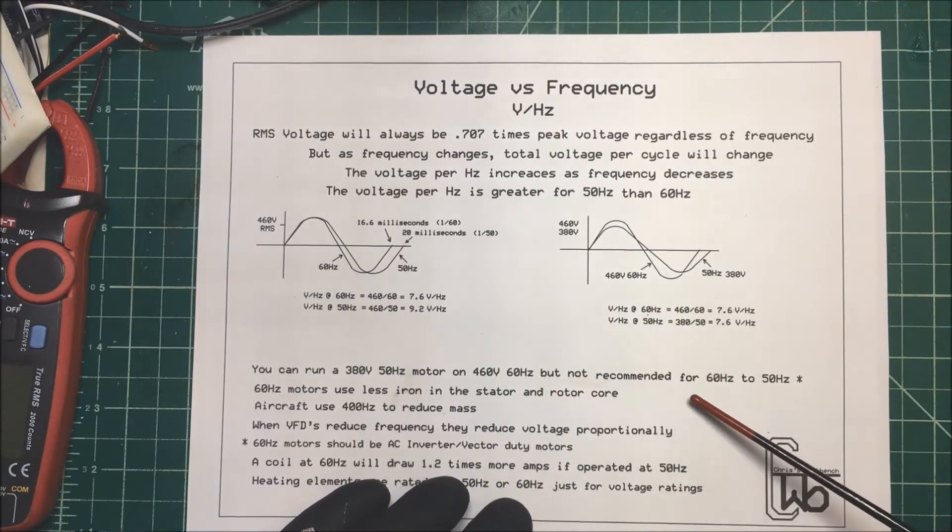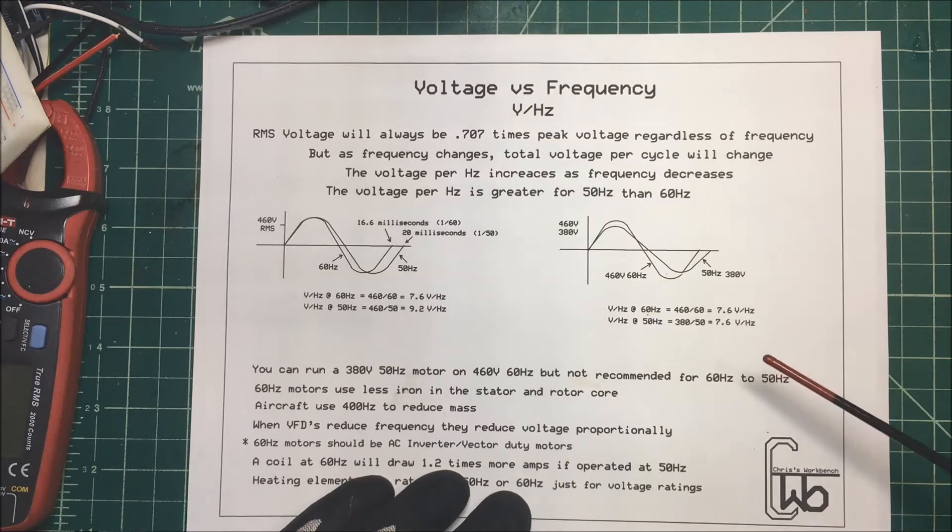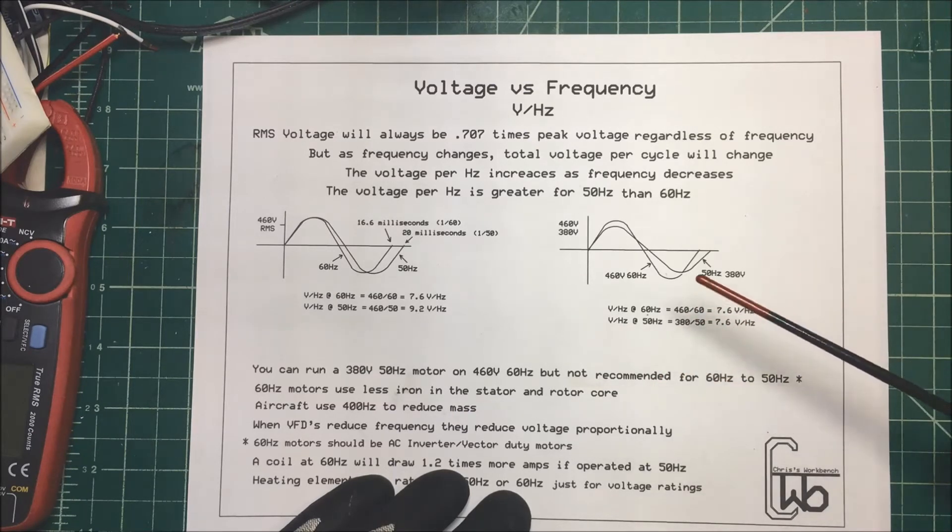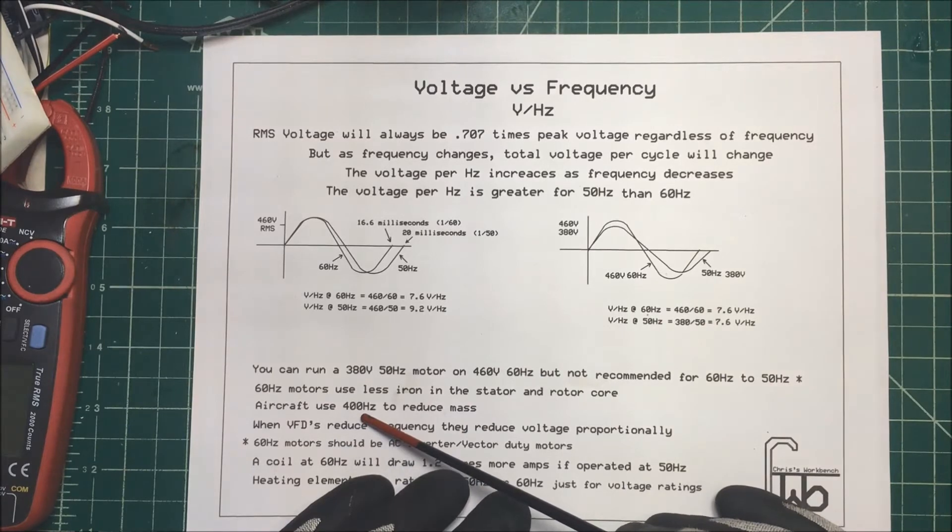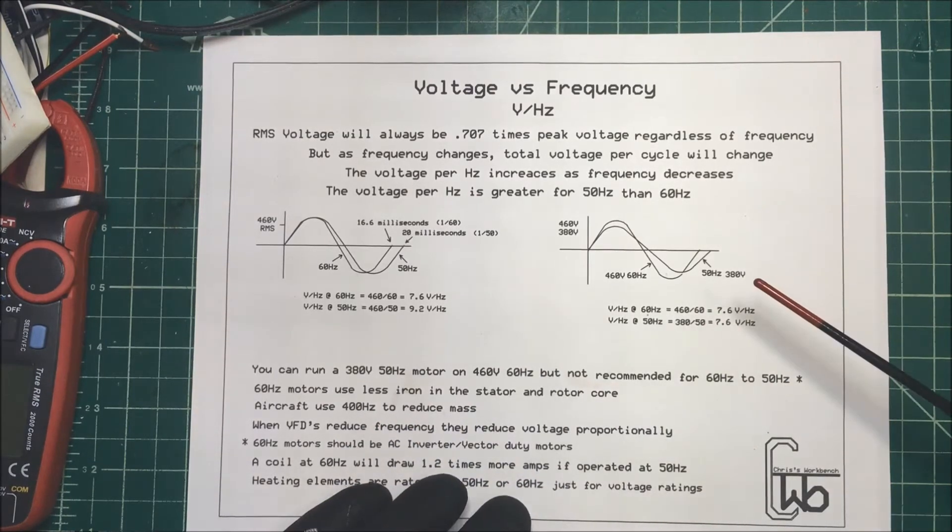Now it's not really recommended to run a 60 hertz at 50 hertz because a 60 hertz motor has less iron in the stator and the core. The higher the frequency you can use, you can use less iron. So aircraft use 400 hertz just to reduce the mass.